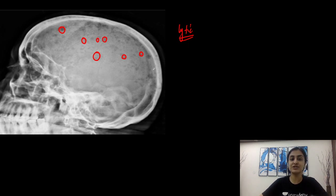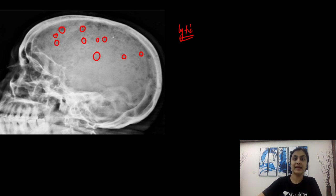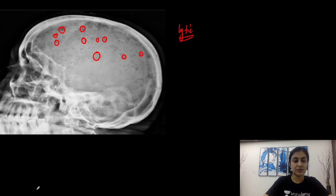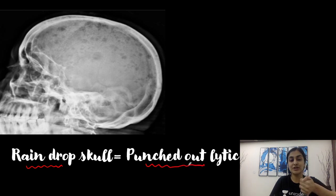A normal bone because of the calcium will appear white on radiographs. But because it is eaten up, those areas which are lysed will no longer appear white — they appear as lytic lucent spots. These are innumerable tiny lytic lesions. Whenever we see multiple well-defined lytic lesions, the term used is the raindrop skull or punched-out lytic lesions. It looks like various punches have been made in the skull bone.